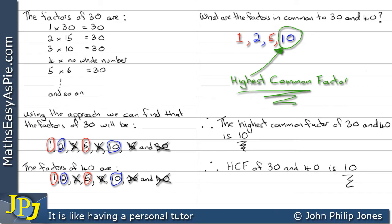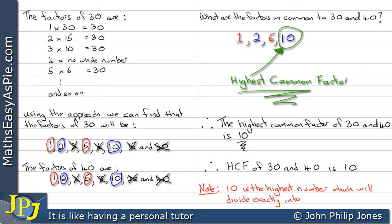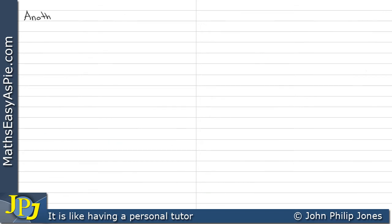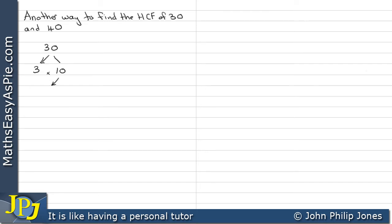We can write out that the highest common factor of 30 and 40 is 10. Please note, 10 is the highest number which will divide exactly into 40 and 30. Another way to find the highest common factor of 30 and 40 is to take each number in turn and express it in its prime factors.